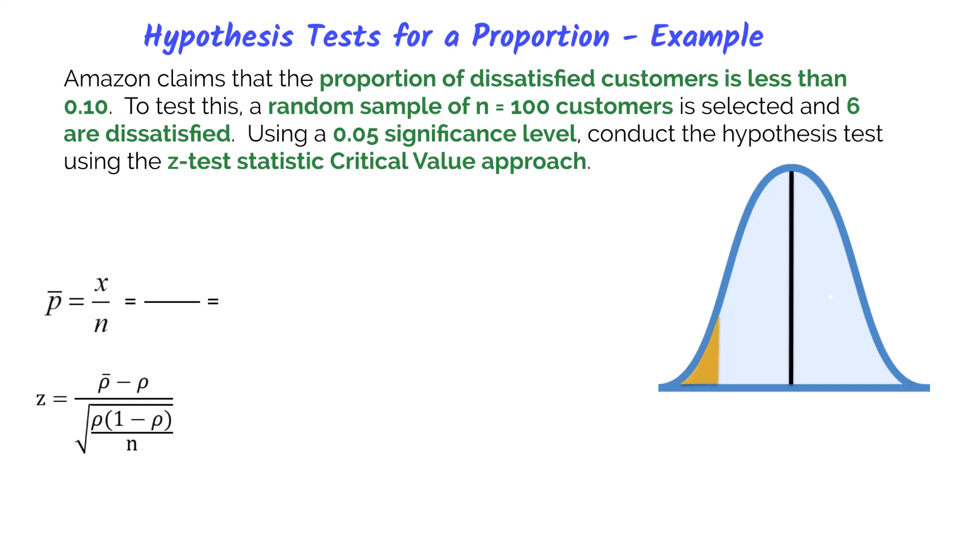Let's look at an example. Amazon claims that the proportion of dissatisfied customers is less than 10%, or 0.10. To test this, a random sample of 100 customers is selected, and six of them report being dissatisfied. Using a 0.05 significance level, we conduct the hypothesis test using the z-statistic critical value approach. The null and alternative hypotheses are based on Amazon's claim. Since the claim says less than 0.10 with no equals sign, that is the alternative hypothesis. So the null is p ≥ 0.10 and the alternative is p < 0.10.